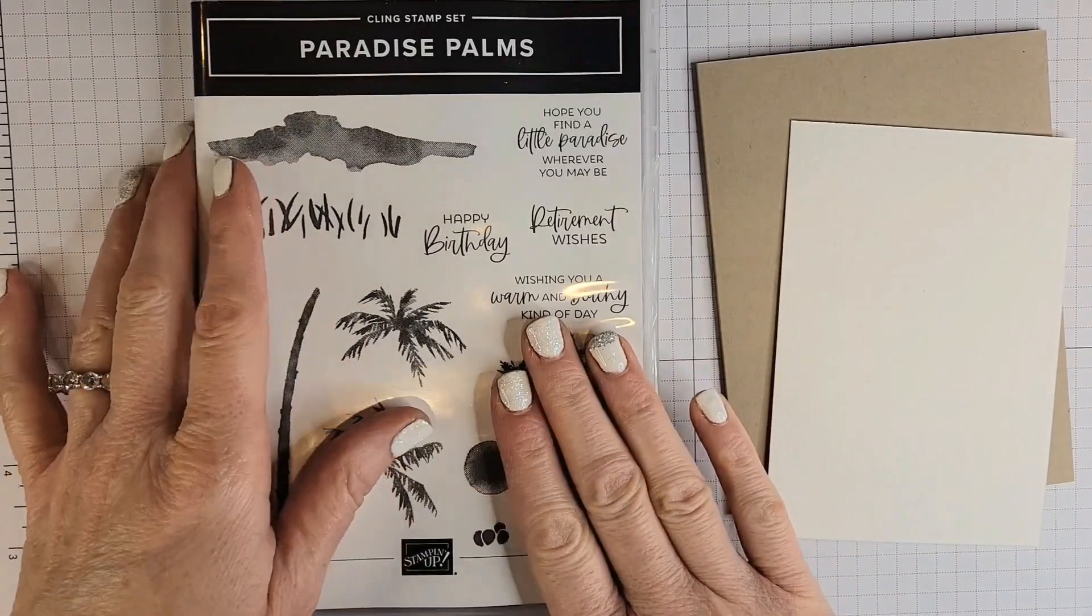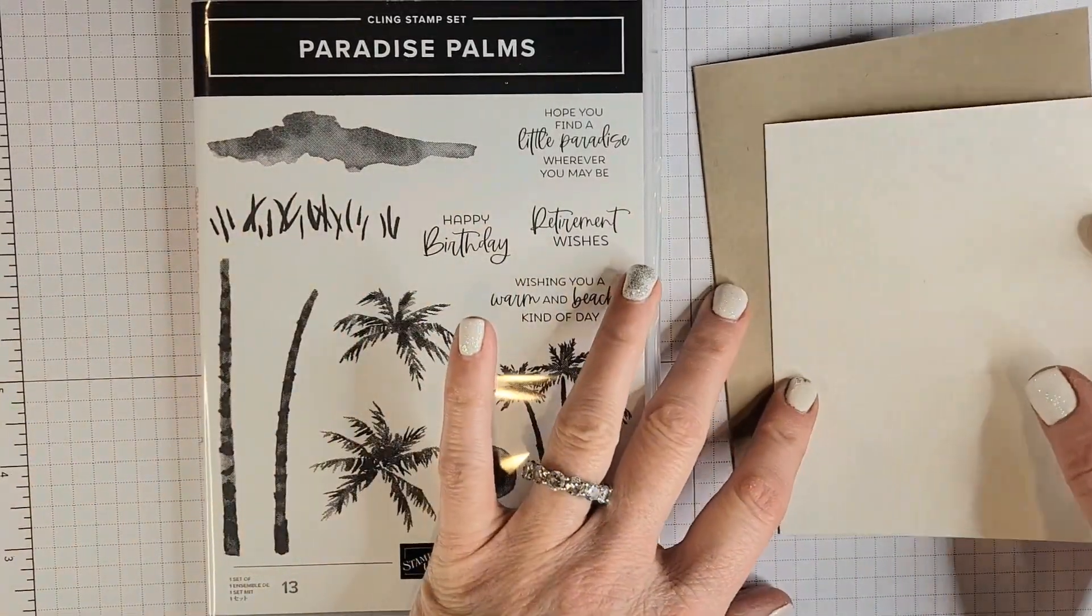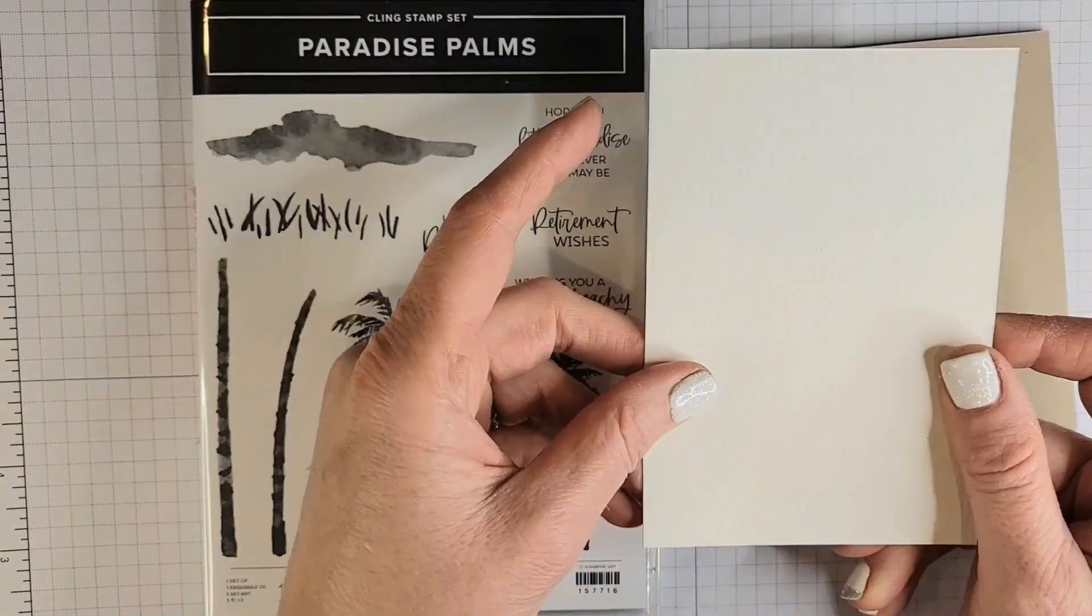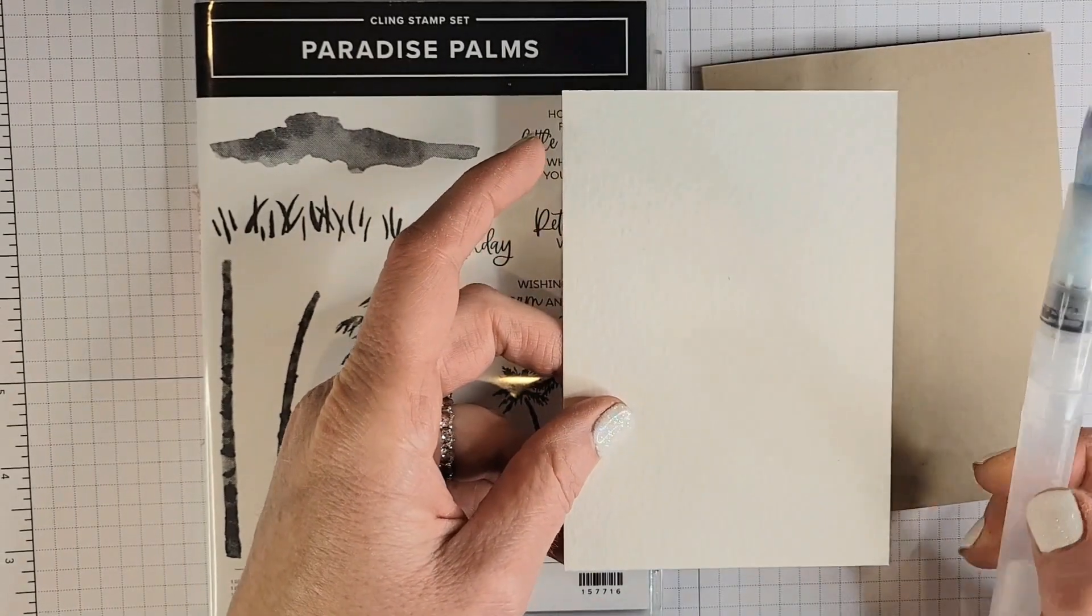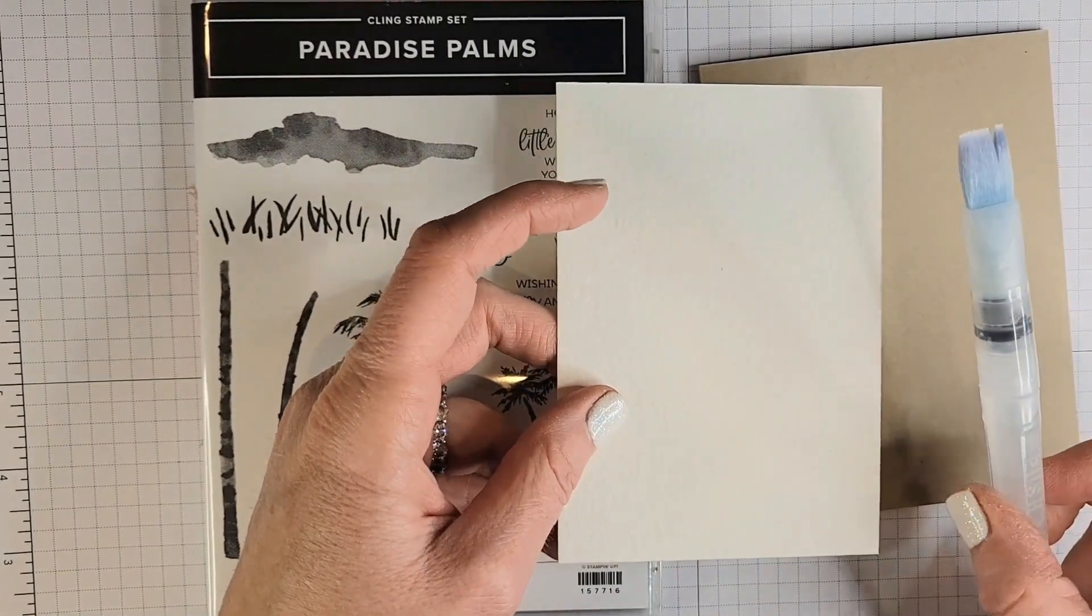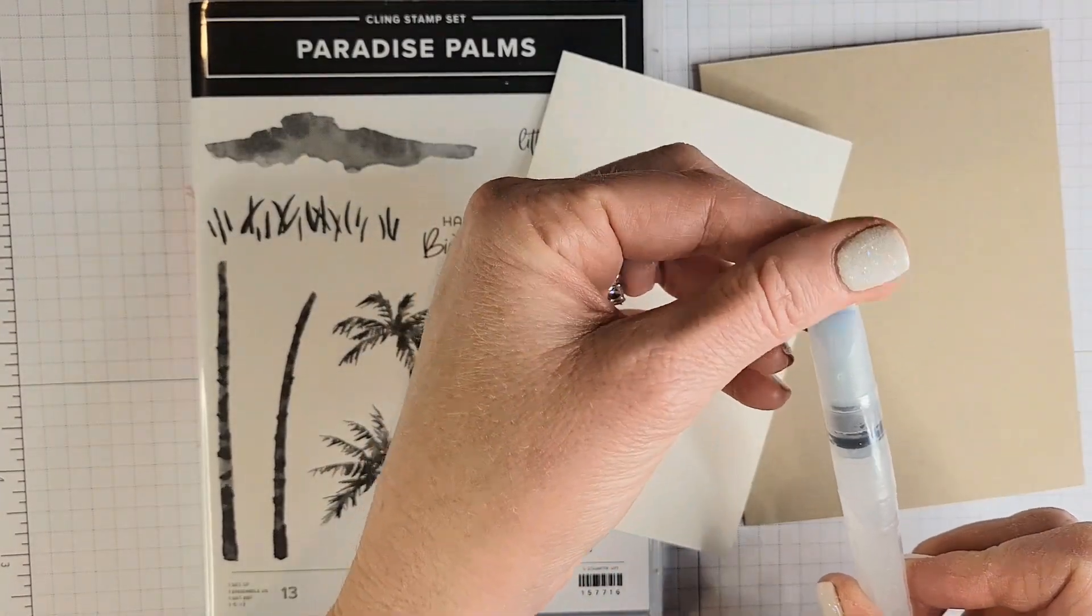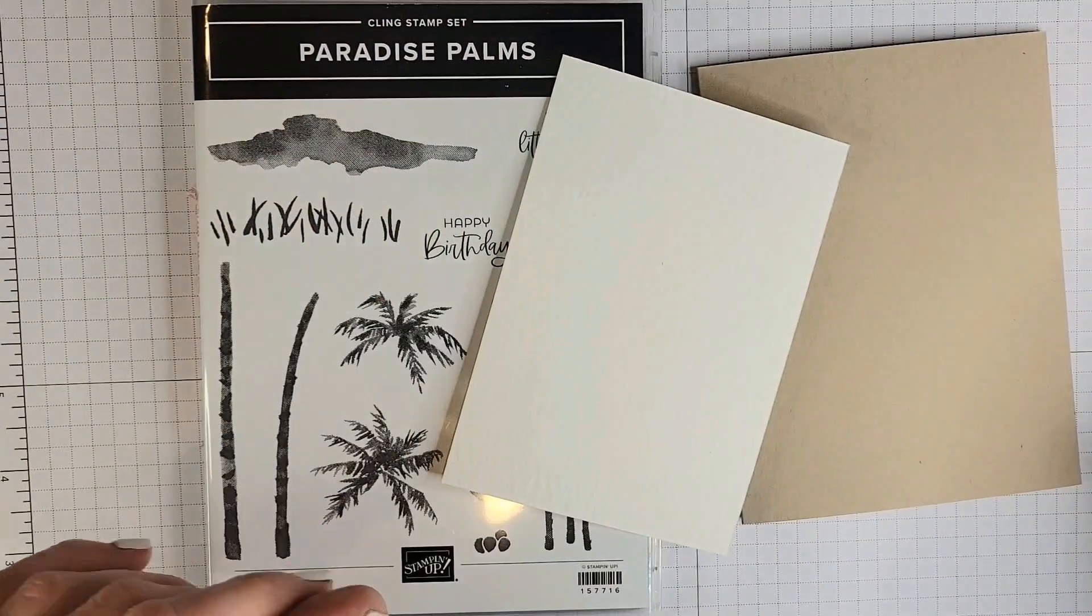This card features Paradise Palms, some watercolor paper because we're doing a watercolor wash, and so I also need my water painter, the one that's really wide so that we can cover a lot of area.